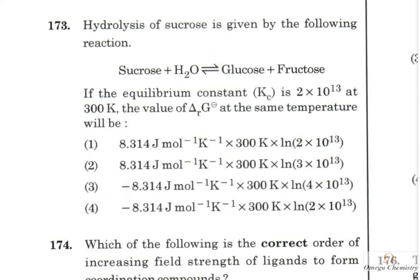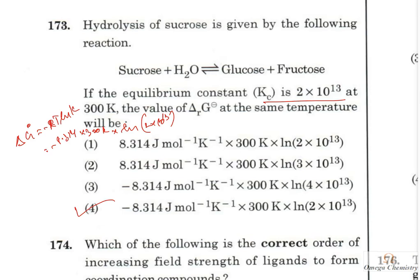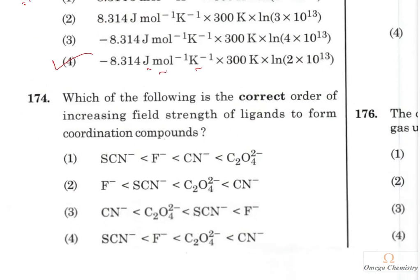Question 165: Hydrolysis of sucrose gives glucose and fructose; equilibrium constant K = 2 × 10¹³ at 300 K. ΔG° = −RT ln K = −8.314 × 300 × ln(2 × 10¹³). The calculated value in joules per kelvin corresponds to the correct answer option.